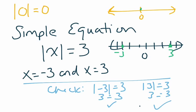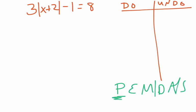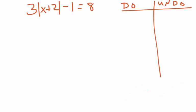Let's take a look at a more complicated equation. This problem is three times the absolute value of x plus two, and then outside the absolute value I have a minus one, and then equals eight. We're going to approach this in a logical way — each step of reasoning should make sense. The absolute value acts like a grouping symbol. So with our order of operations — please excuse my dear Aunt Sally — the absolute value qualifies as a grouping symbol, just like parentheses.